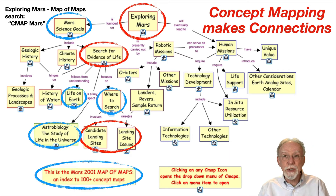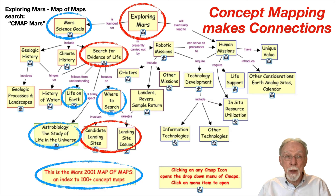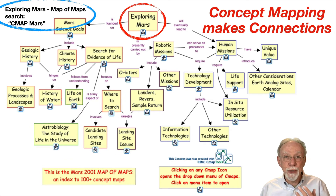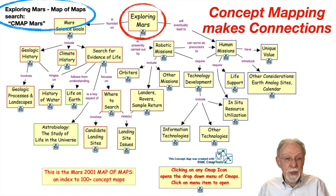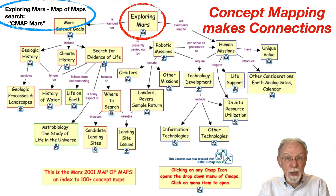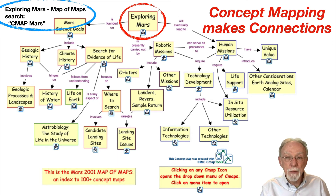What you're seeing on this page is called the Mars 2001 map of maps. It connects to over 100 concept sub-maps. If you'd like to explore this yourself, just Google 'cmap mars' and one of the first listings will be 'Exploring Mars map of maps.' Select that and you'll be able to actively explore all 100 concept maps to see how NASA develops a mission plan.